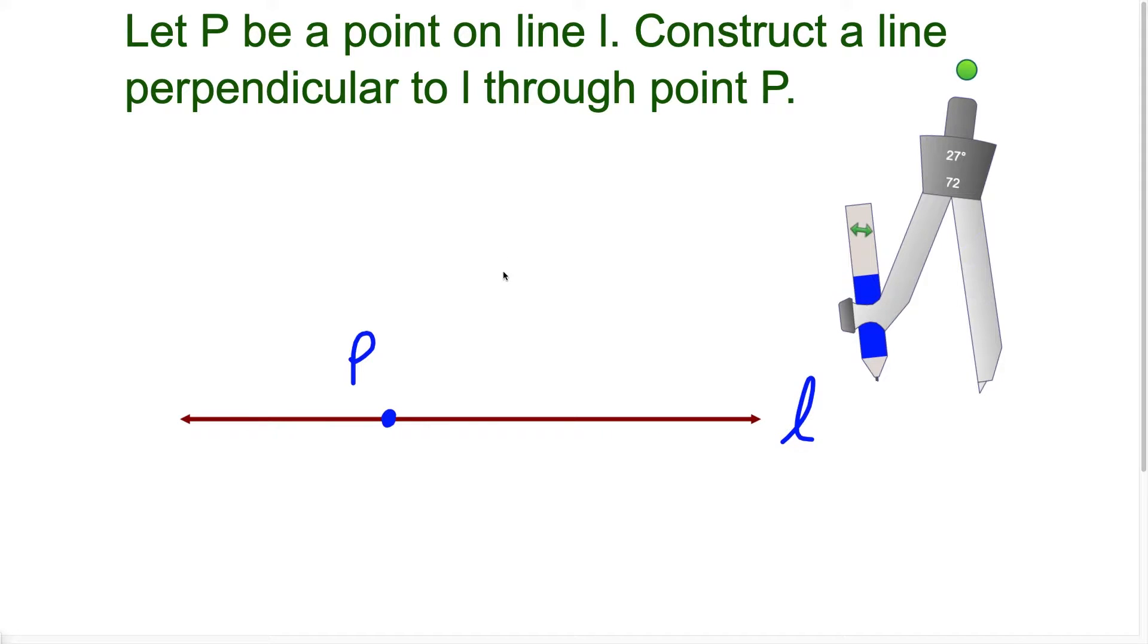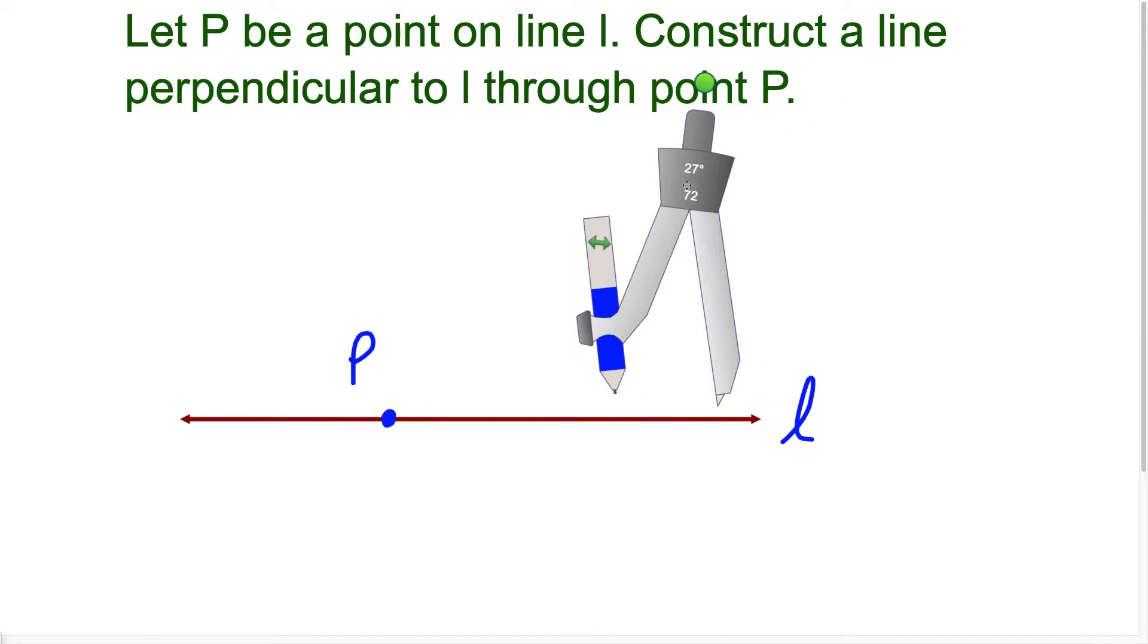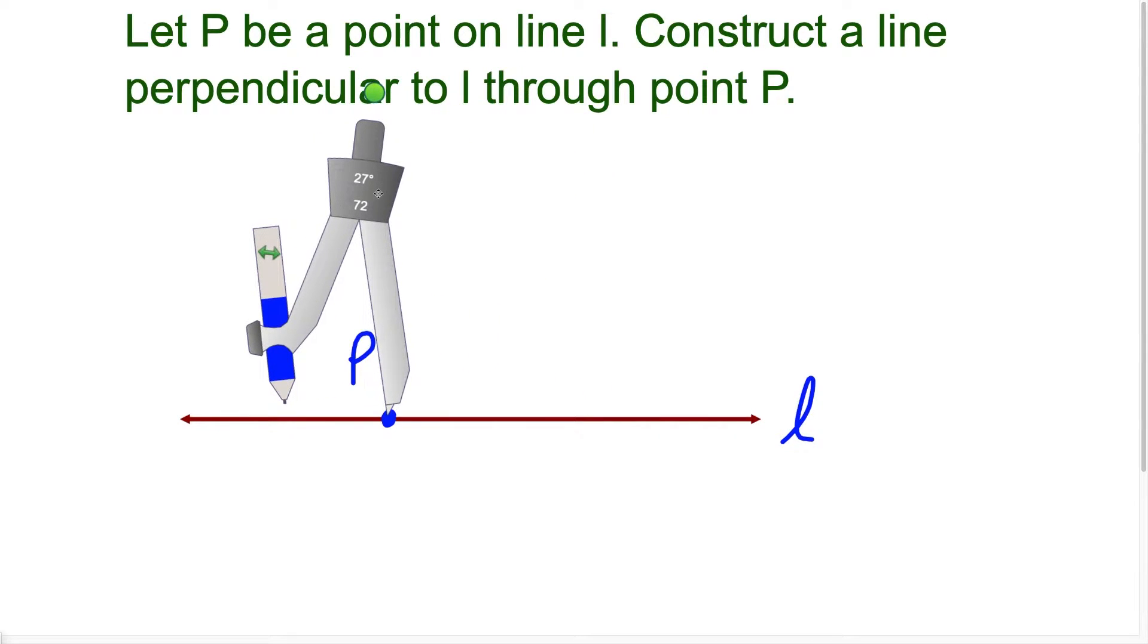For this particular question we have point P is on line L and we want to construct a line that goes through point P and it's perpendicular to line L.